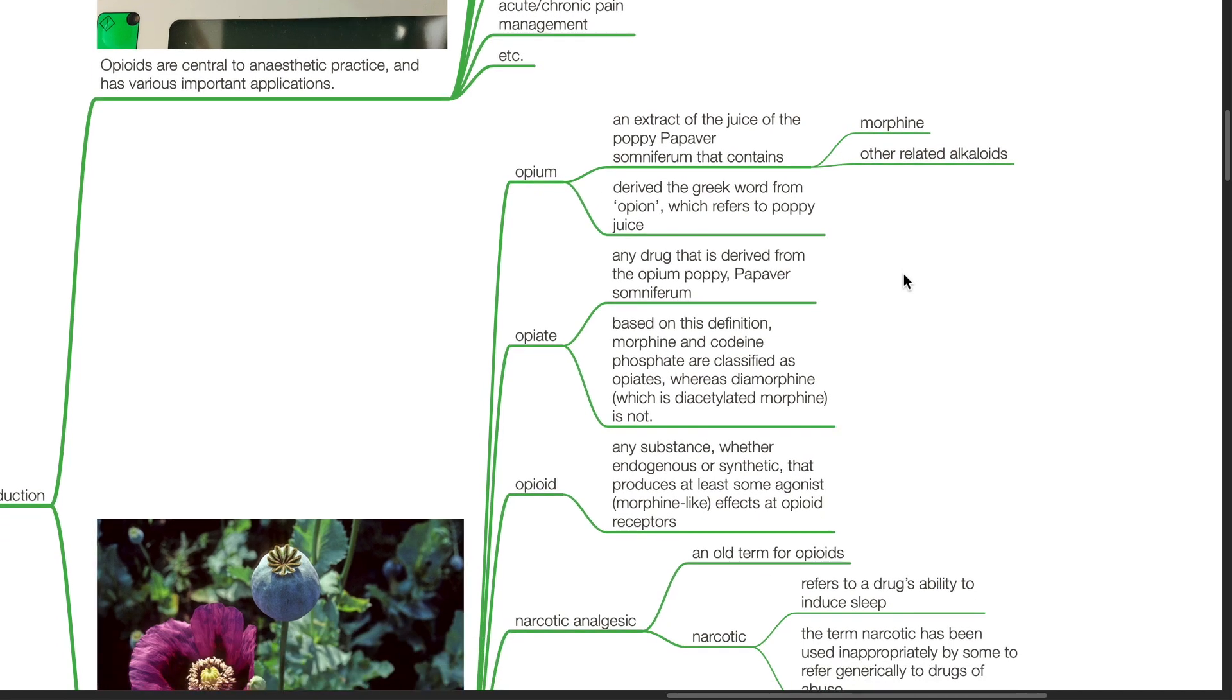Opiate is defined as any drug that is derived from the opium poppy papaver somniferum. Based on this definition, morphine and codeine phosphate are classified as opiates, whereas diamorphine is not.